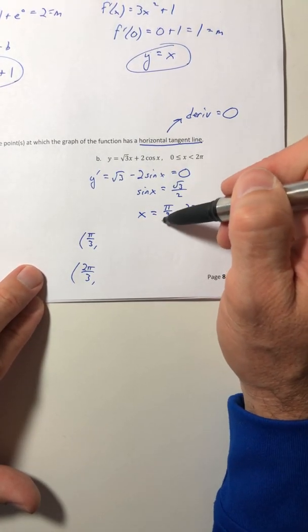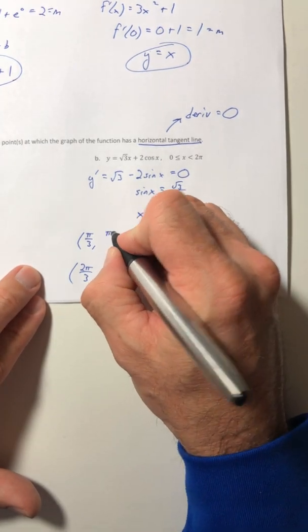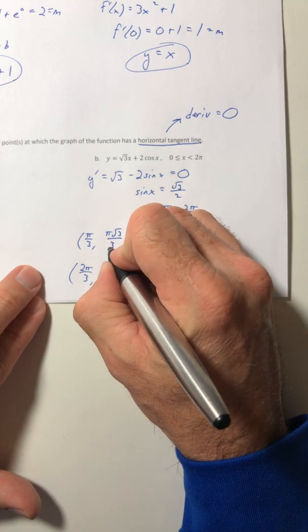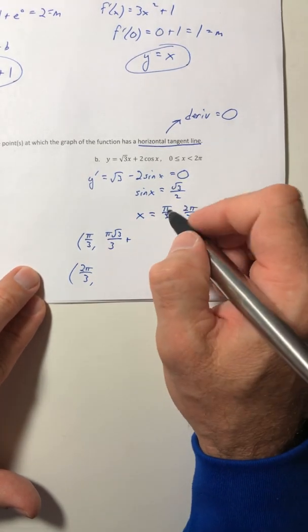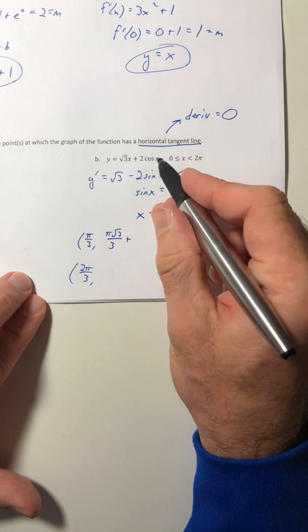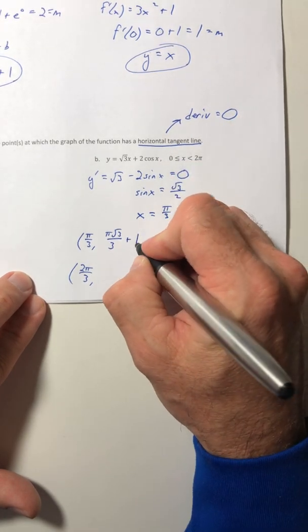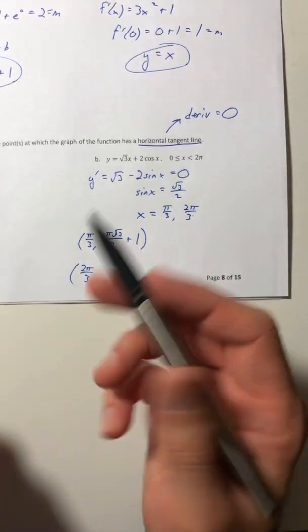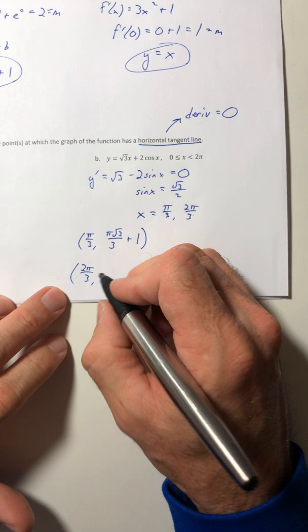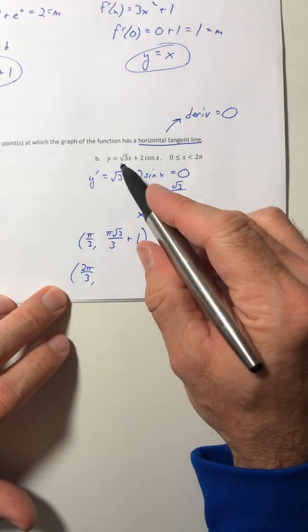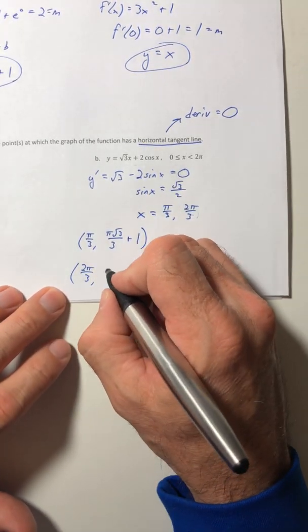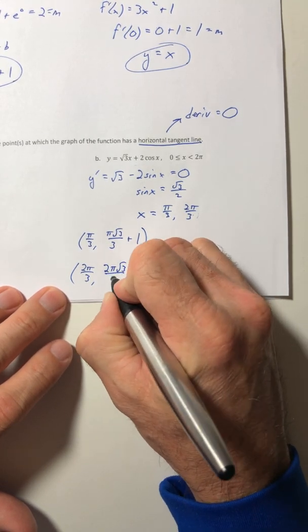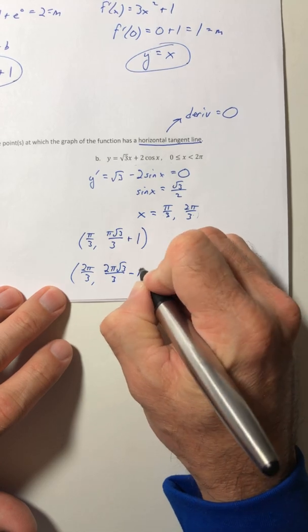So go back to the original equation to get the y value. So when x is pi over 3, you get pi root 3 over 3 plus, and then if you stick pi over 3 in a cosine that comes out as a half times 2 is 1. You could combine this into one fraction if you want with common denominator. You don't have to. Okay, take the 2 pi over 3, plug it into the y equation, and you get 2 pi root 3 over 3 minus 1.